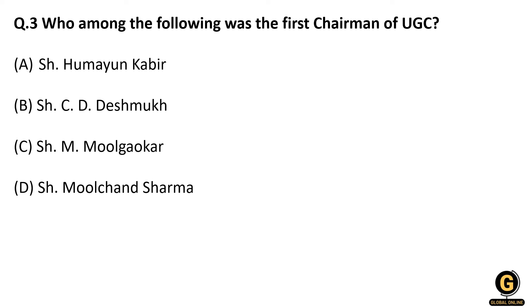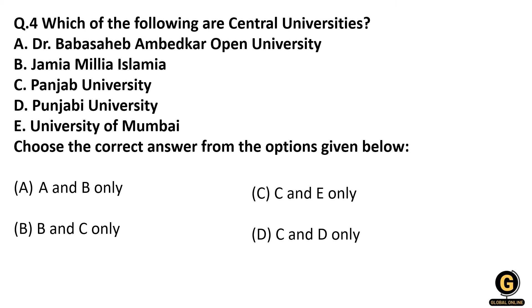So remember: UGC was formed in 1945, its authority was extended across all Indian universities in 1947, and in 1956 it was granted statutory body status. Its first chairman after becoming a statutory body was Sir C.D. Deshmukh. Remember these three years: 1945, 1947, and 1956.